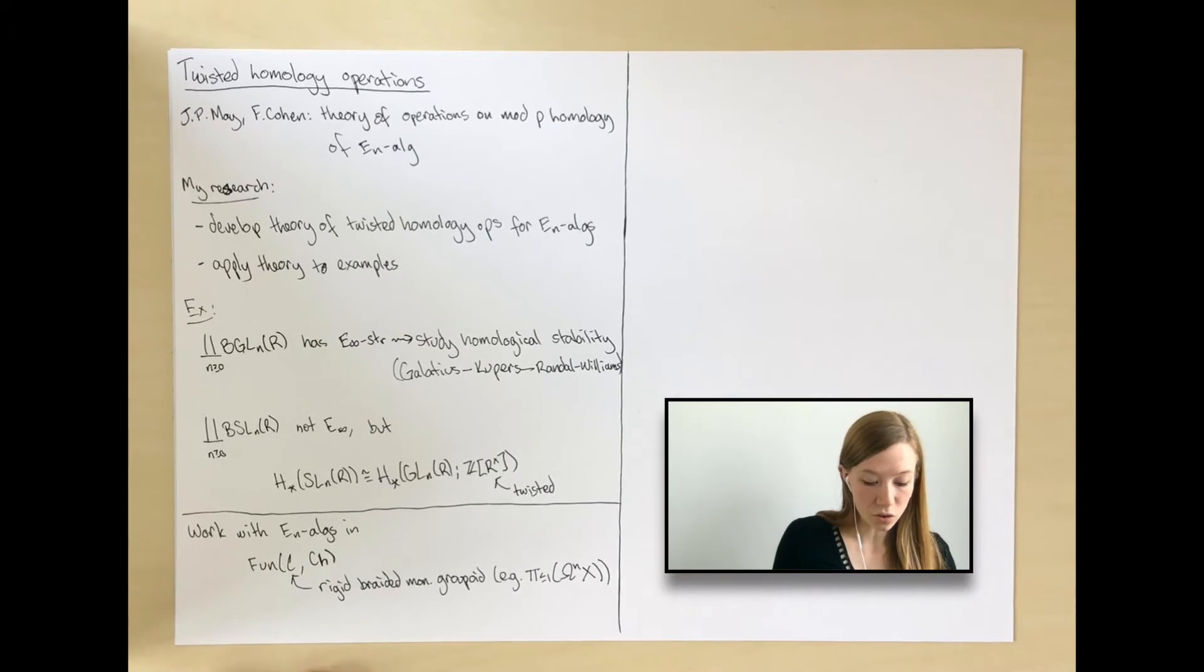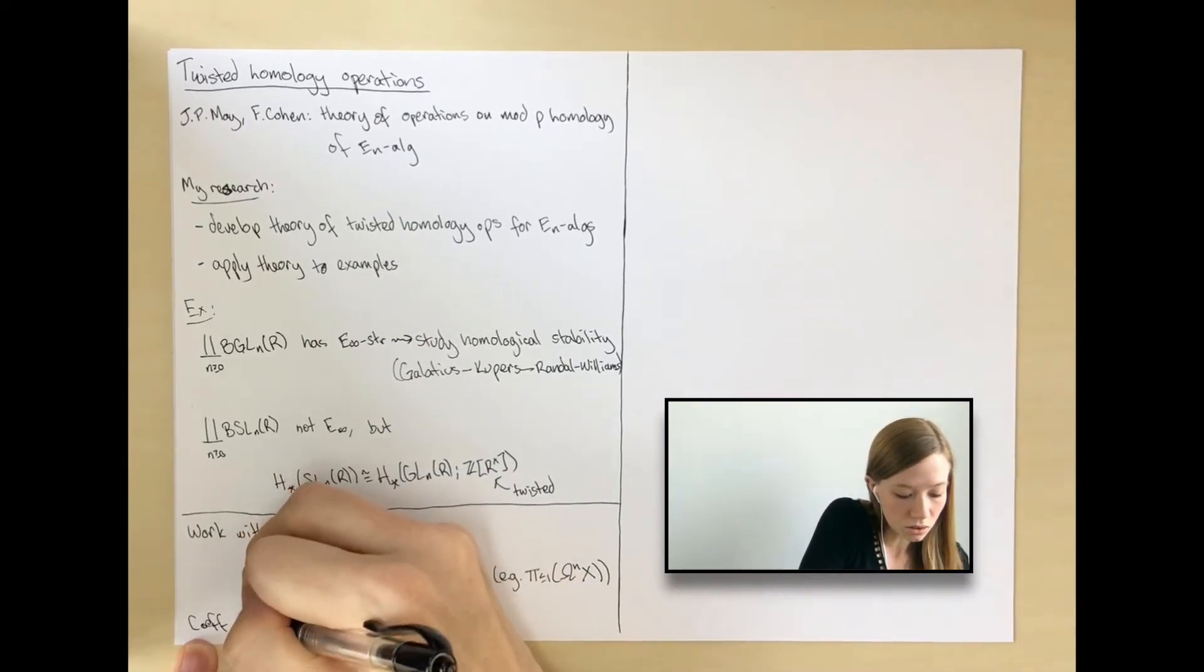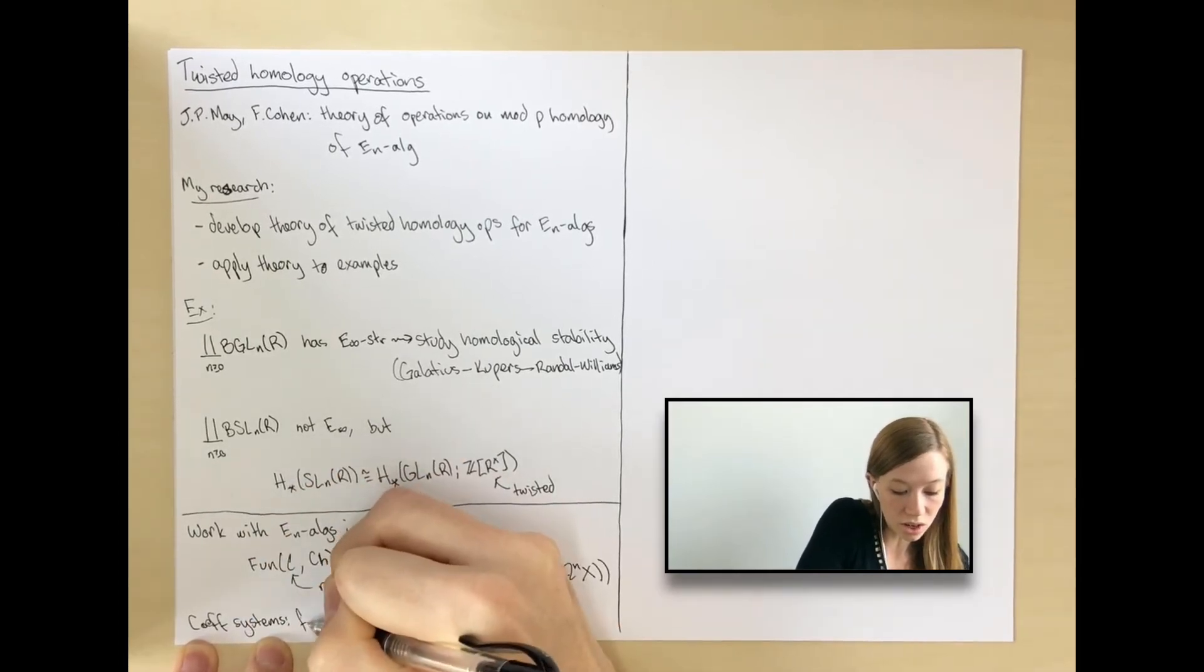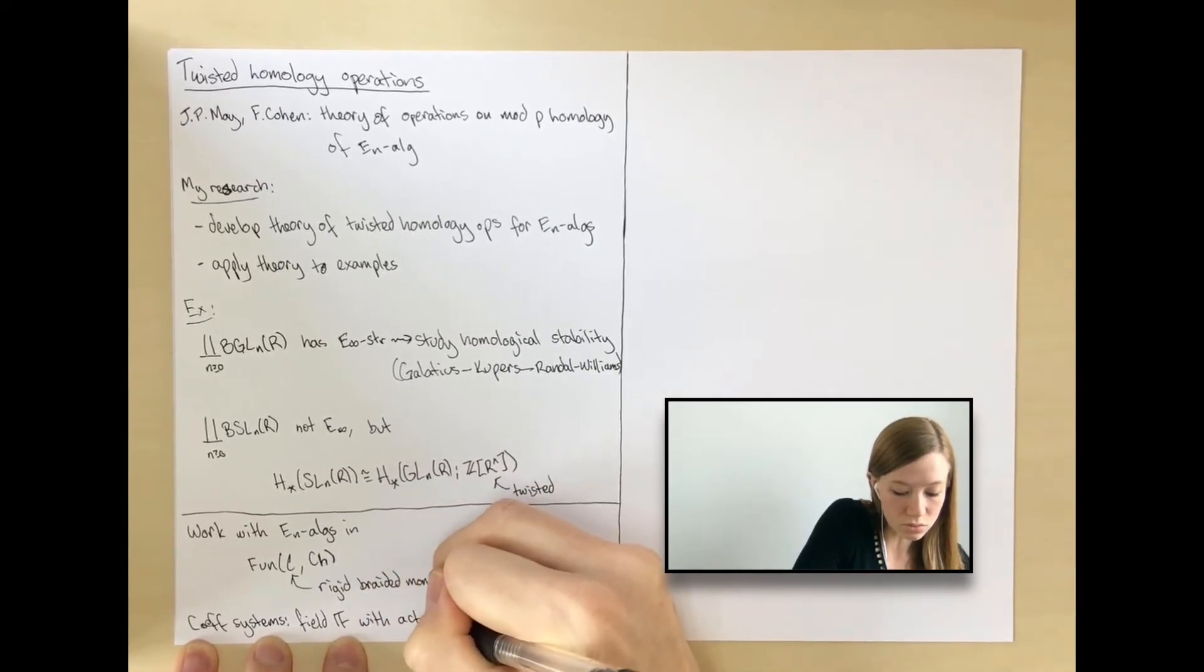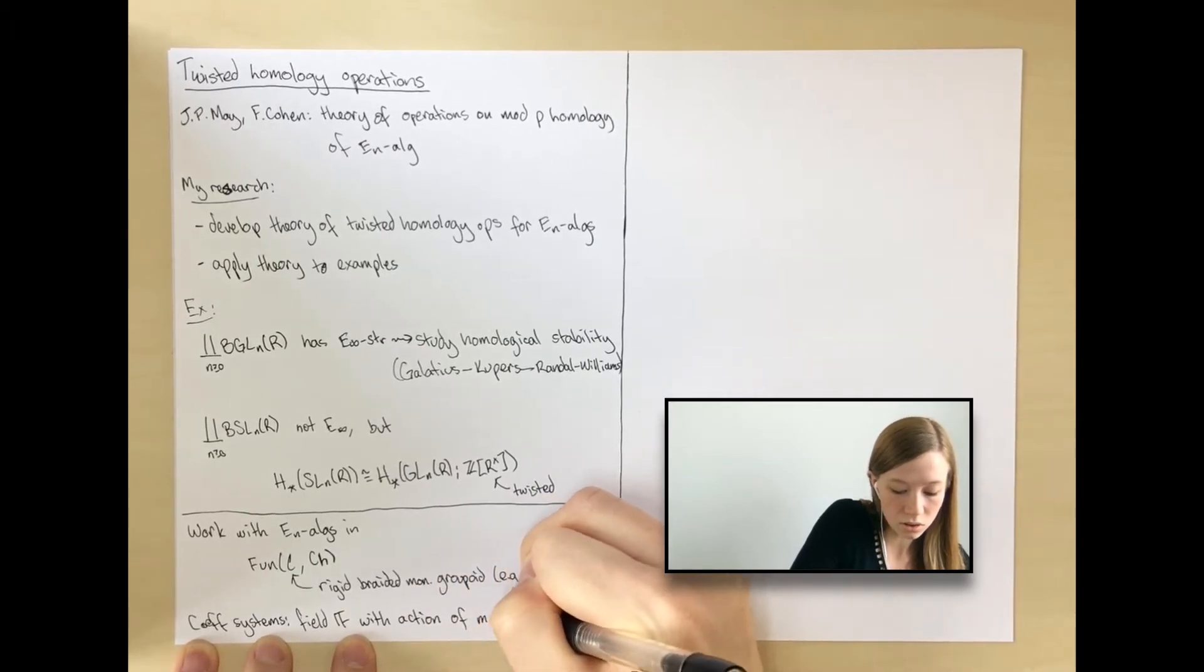And the coefficient systems that I consider consist of a field F together with an action of the morphisms of this category C on F.